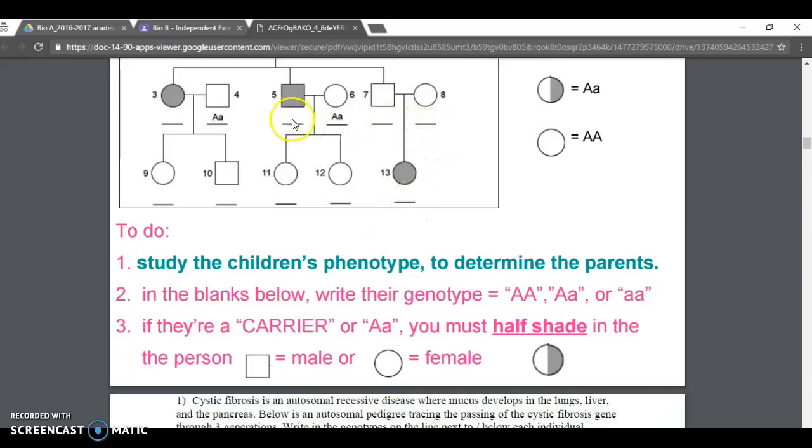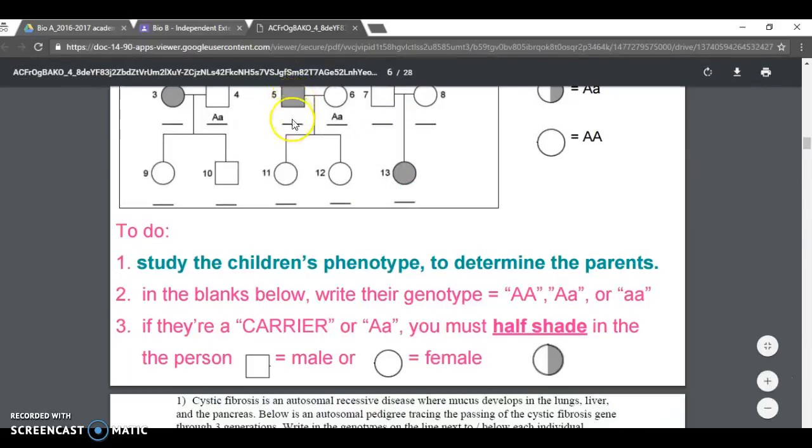You'd put little a little a for them. Fill it out as best you can. If you need a reminder, this kind gives you ideas. It says study the children's phenotype to determine the parents. In the blanks below, write their genotype. Any blank you see, you need to designate the two alleles that person has.